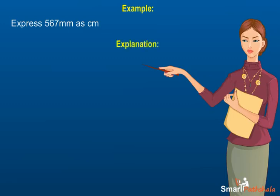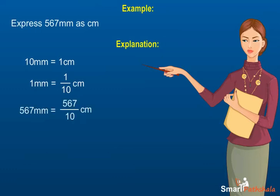Example: Express 567 millimetres as centimetres. Explanation: We know that 10 millimetres is equal to 1 centimetre. So 1 millimetre is equal to 1 by 10 centimetre. Therefore, 567 millimetres is equal to 567 multiplied by 1 by 10 centimetres, which is equal to 56.7 centimetres.